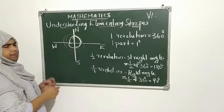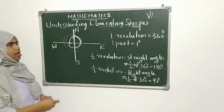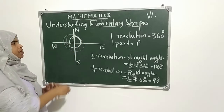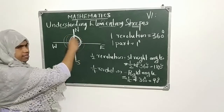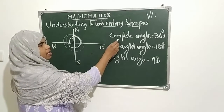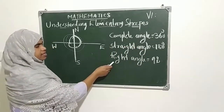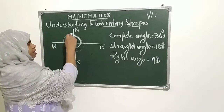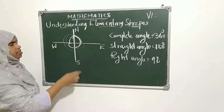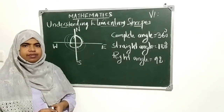Once more: one complete revolution is 360 degrees. Half revolution is a straight angle, that is 180 degrees. One-quarter revolution is a right angle, that is 90 degrees. Complete angle equals 360 degrees, straight angle equals 180 degrees, and right angle equals 90 degrees.